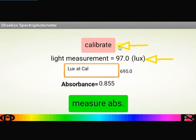This calibrate button that you press, as you saw in the previous video, when you put your blank in will store the light measurement at that point. And it also displays it here.